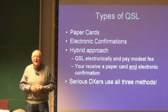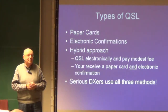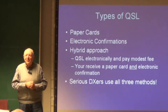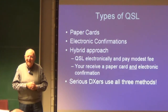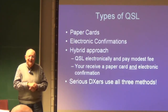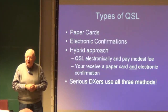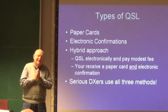A serious DXer uses all three of these methods. Let's gauge the audience: how many of you have cards confirming contacts with 100 countries? 200? 300? 339? There are today 339 entities — since some of these little islands certainly can't be considered countries, and some big ones like Alaska can't be considered a country, but it is considered a separate entity as far as DX awards are concerned. So there are 339 today.